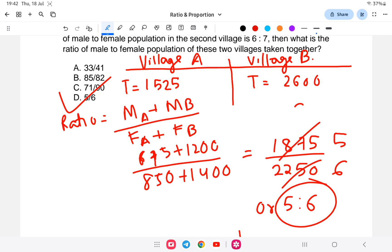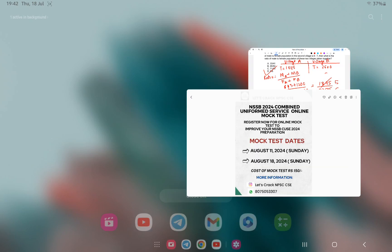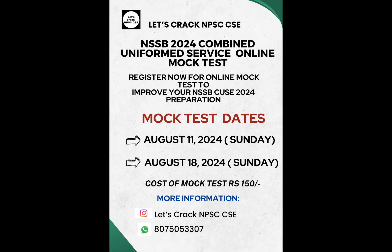This simplifies to 5:6. So the answer is 5:6. With this, the video has come to an end. If you are interested in the mock test, the link is provided in the description. You can check it out. I wish you all the best for your Combined Uniform Service. Thank you.